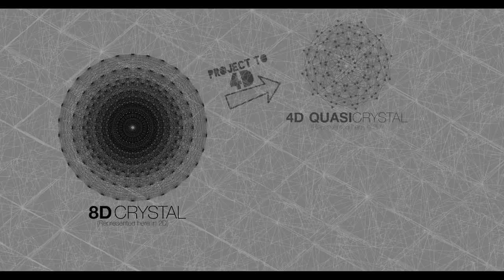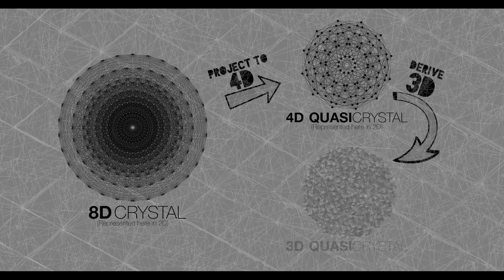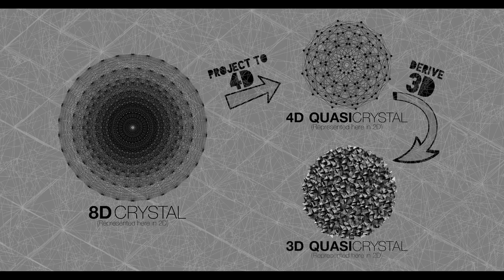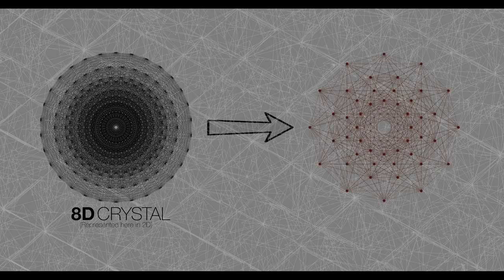To generate that 3D quasi-crystal — the substructure of the pixelated fabric of reality — we project this 8D crystal to 4D, and then convert that to 3D. Just like the basic cell shape of the 3D cubic lattice is the cube, the cell shape of the E8 lattice is an 8D shape with 240 vertices, called the Gossett polytope.